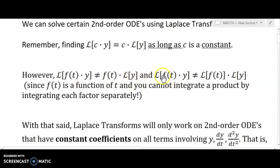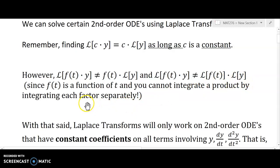Similarly, you can't write the Laplace of a product of two things as the Laplace of one times the Laplace of the other. The reason that doesn't work is because this is integration, and when you integrate a product of two things you have to use things like integration by parts. So unfortunately that won't work either.